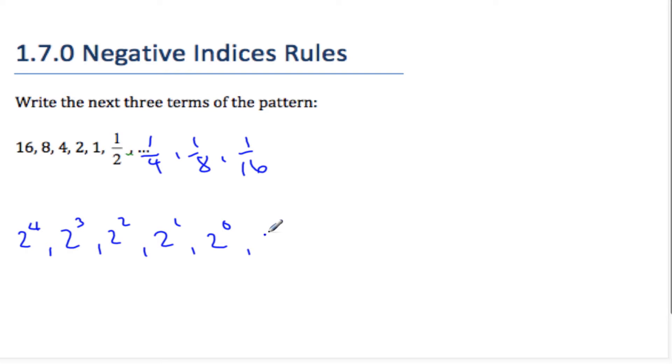Now what's 1 half going to be the same as then? As 2 to the negative 1. Right, if I look at the pattern, 4, 3, 2, 1, 0, negative 1, the pattern exists. And so this is going to be 2 to the negative 2. 2 to the negative 3, 2 to the negative 4.